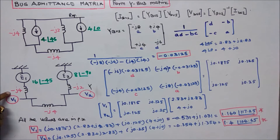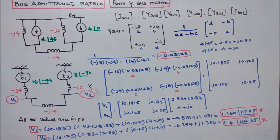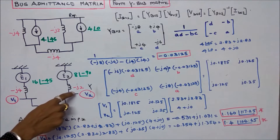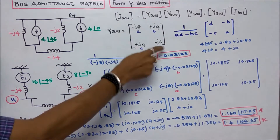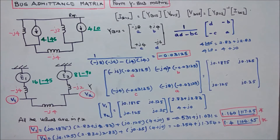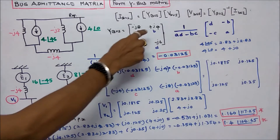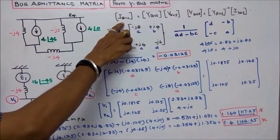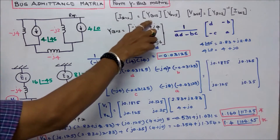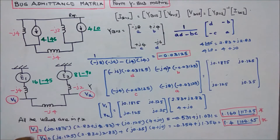For the Y-bus matrix: the off-diagonal element Y12 equals minus J4 plus minus J4, which is minus J8. Y21 equals minus J2 plus minus J4, which is minus J6. For the diagonal element, there is only one element: minus times minus J4, giving plus J4 plus J4. We know that I-bus equals Y-bus into V-bus.